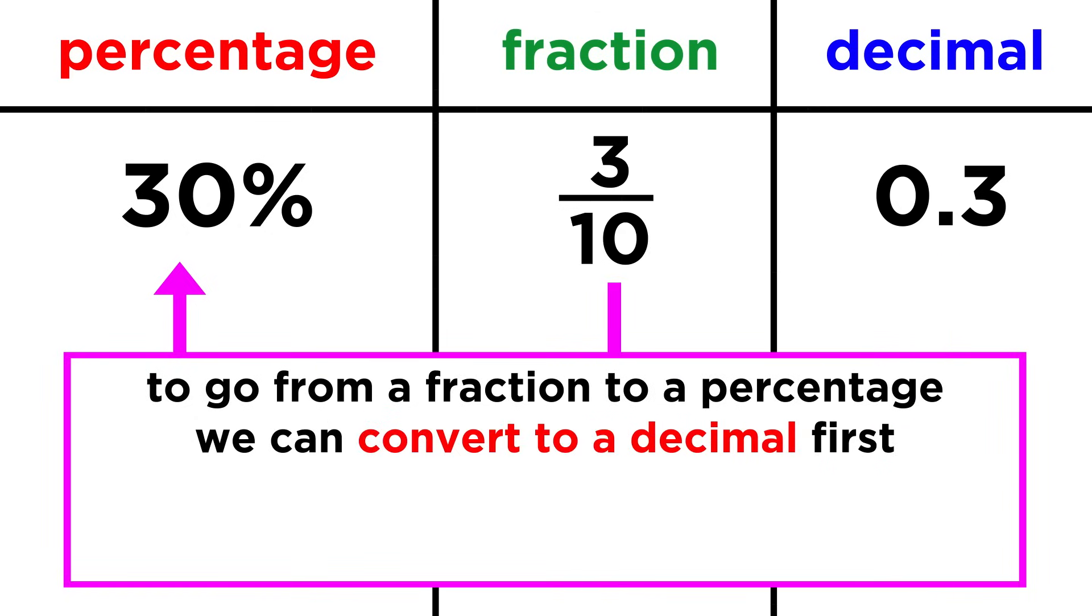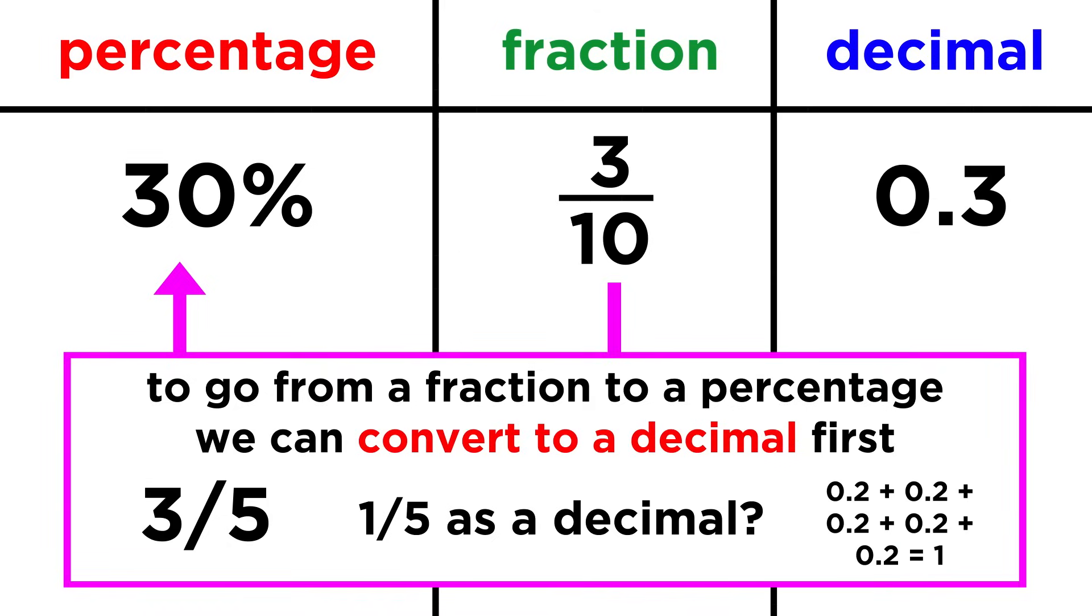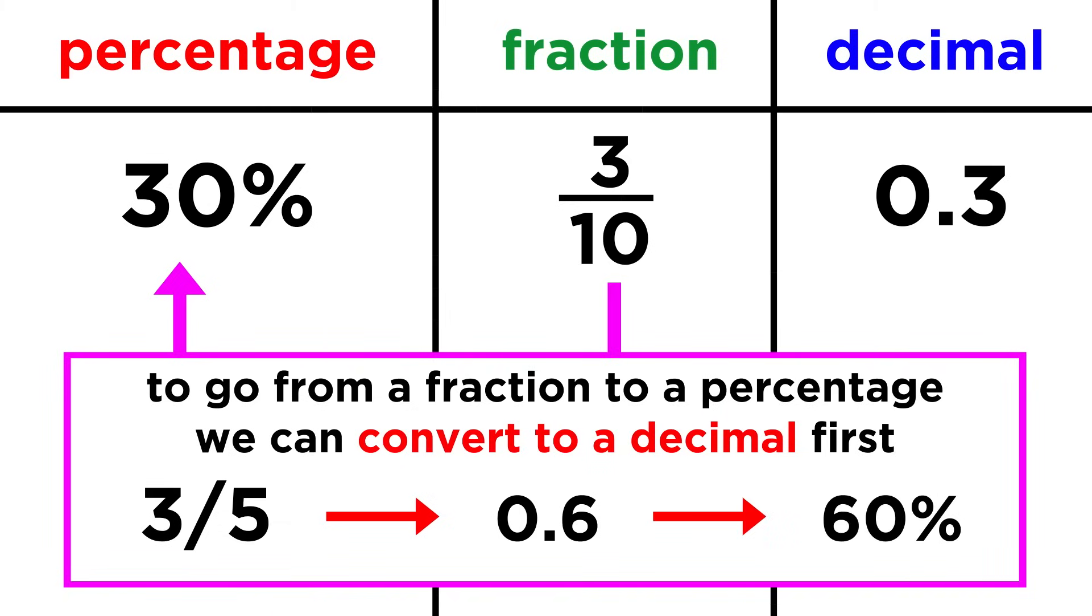To go from a fraction to a percent, we could convert the fraction into a decimal first. For three fifths, first we can ask, what is one fifth as a decimal? That would be zero point two, because five of these, or five fifths, would add up to one, so three fifths must be zero point six. From there, we just move the decimal over twice, adding a zero since we need to, and we get sixty percent.